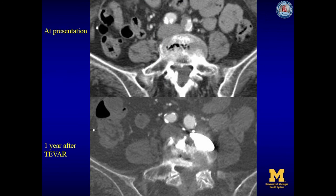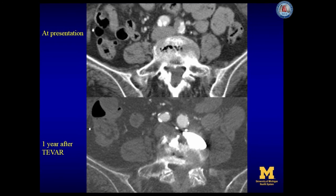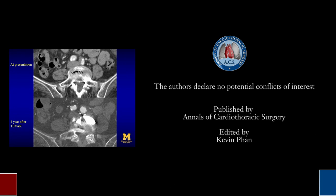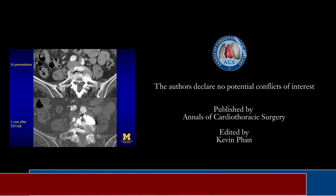At presentation, the left common iliac artery was dissected. One year after TEVAR, true lumen expansion of the left common iliac artery was seen. This was our presentation of how acute type B aortic dissection with malperfusion is managed with TEVAR in our institution.